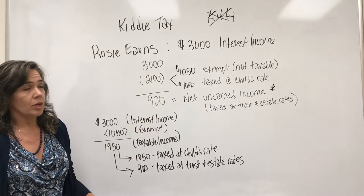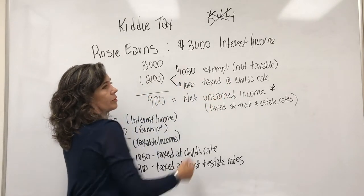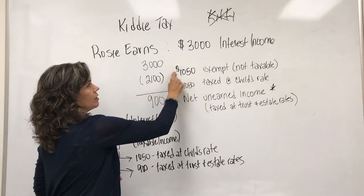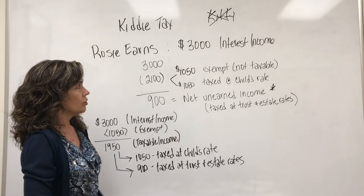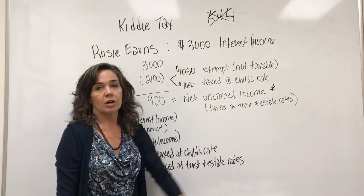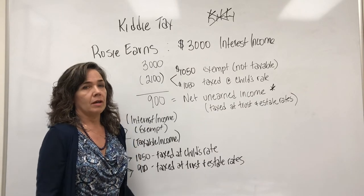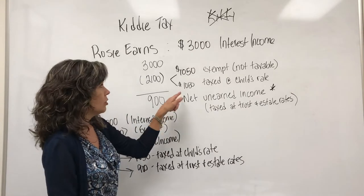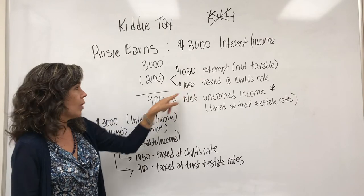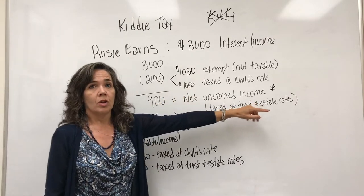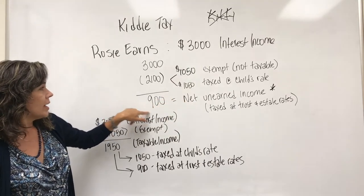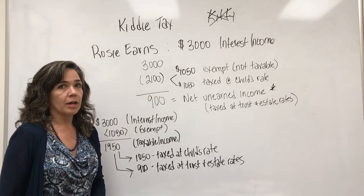So let's talk about what that $2,100 is. There's an exempt amount — kind of like a standard deduction — where no matter how much your child earns, they always get the first $1,050 that's not taxable. The next $1,050 is taxed at the child's rate, which is usually lower — they're not normally up in the higher tax brackets. But that's as much as will ever be taxed at the child's rate. The rest is taxed at the trust and estate rates, which are generally higher, and that prevents pushing income down to your children.